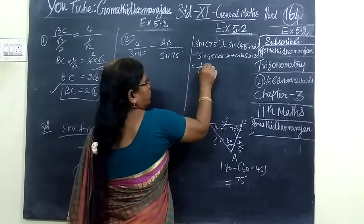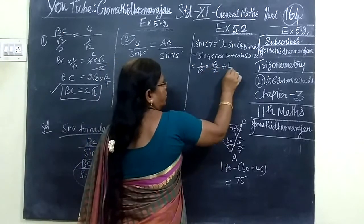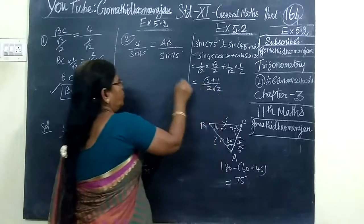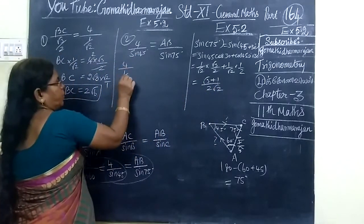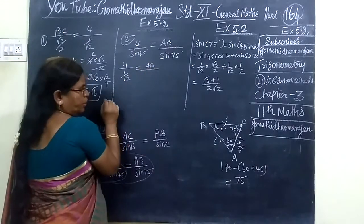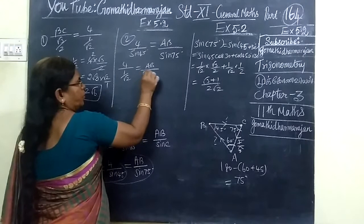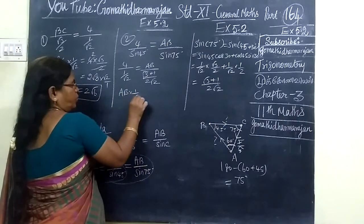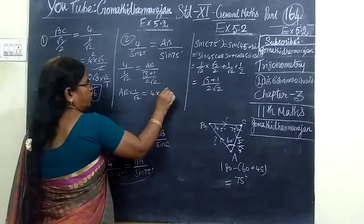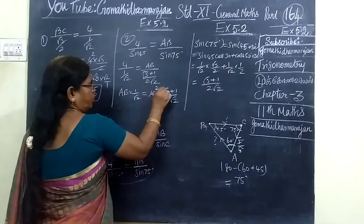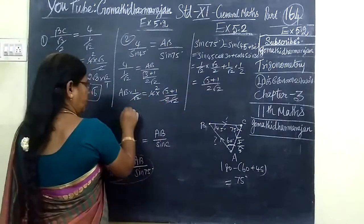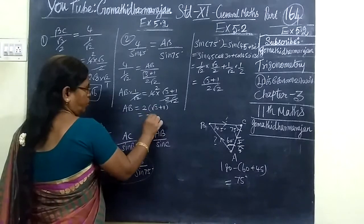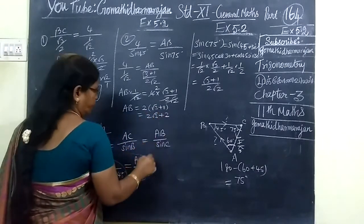So this is equal to root 3 by 2 root. So now you cross multiply. So AB into 1 by root 2 equal to 4 into root 3 plus 1 by 2 root. So this will cancel. So this will be root 2 root 3 by 2, cancel one. So AB equal to 2 bracket root 3 plus 1. So 2 root 3 and then plus 2.